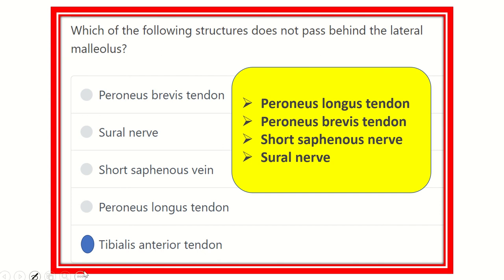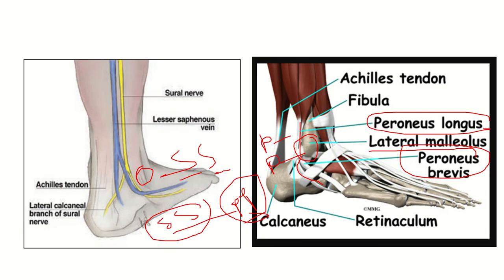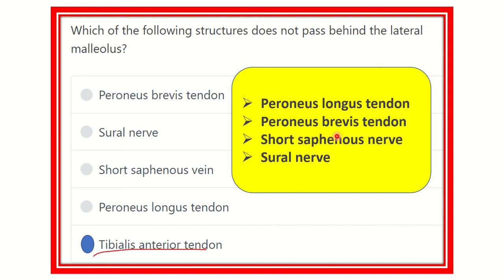Our final answer is the tibialis anterior tendon — it does not pass behind the lateral malleolus. The tibialis anterior passes to the extensor aspect of the foot, or dorsum of the foot, and lies on the anterior surface. Therefore, the tibialis anterior does not pass behind the lateral malleolus.